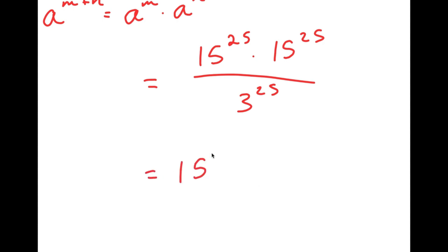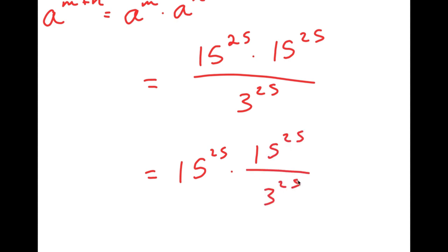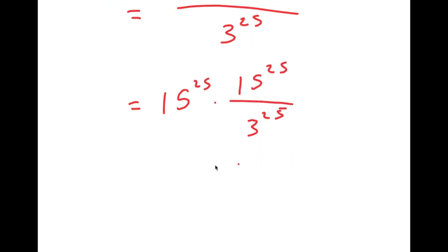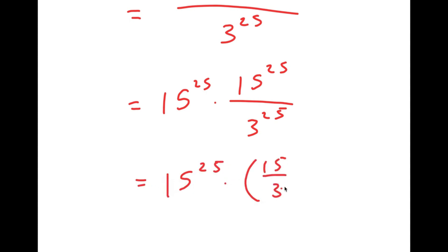So in this case, 15 to the power of 25 plus 25 is going to equal 15 to the power of 25 times 15 to the power of 25, and I have this over 3 to the power of 25. This is equal to 15 to the power of 25 times 15 to the power of 25 over 3 to the power of 25, which is equal to 15 to the power of 25 times 15 over 3 to the power of 25.